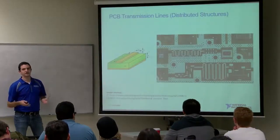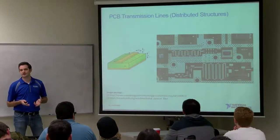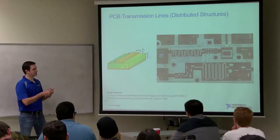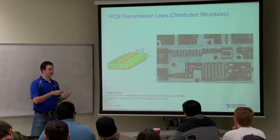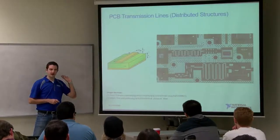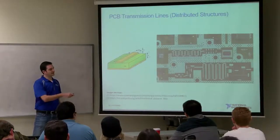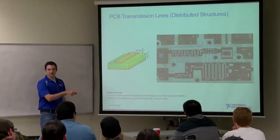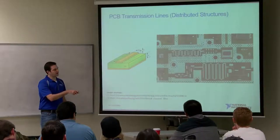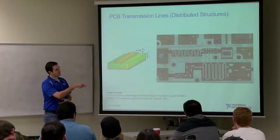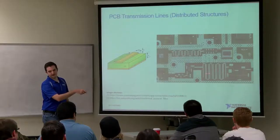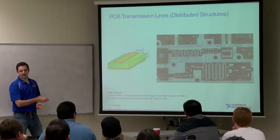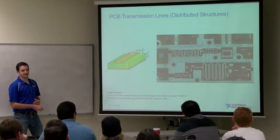Distributed structures are sometimes called printed structures. Here's a generic diagram of a microstrip on a substrate — you can see a copper trace where your signal travels across the board. Here's a picture of a generic printed circuit board with its typical green material, where all the gray areas are printed copper. The squiggly lines and weird-looking shapes are our distributed elements forming distributed element filters.